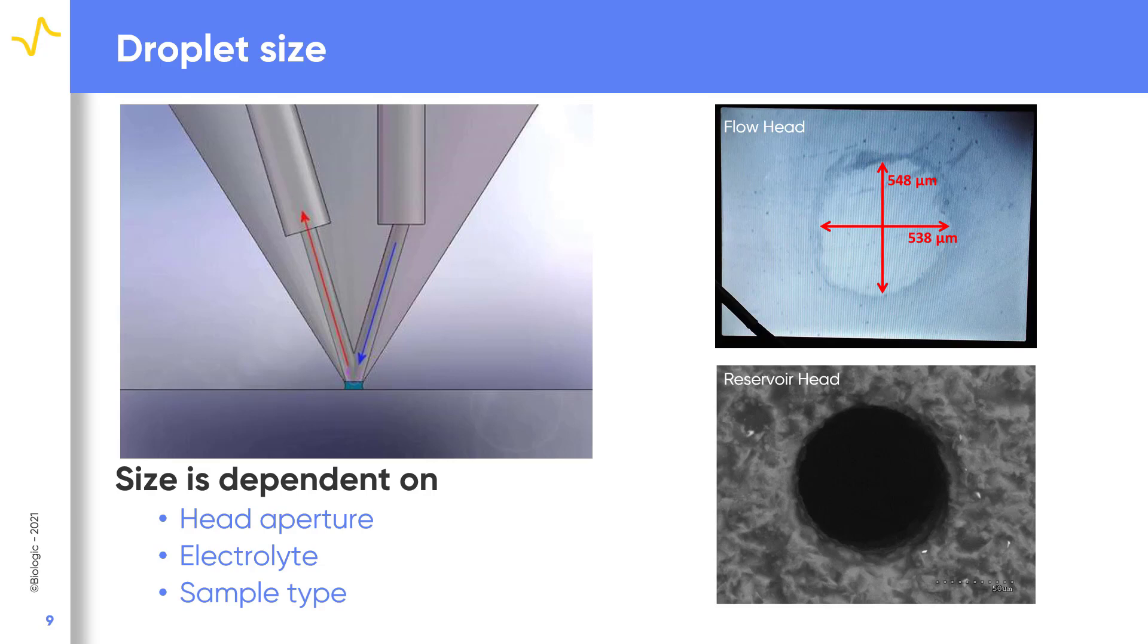Finally, the sample type is important. If the sample is not easily wet by the electrolyte used, the droplet will be more easily confined, exposing a smaller area and increasing the resolution.